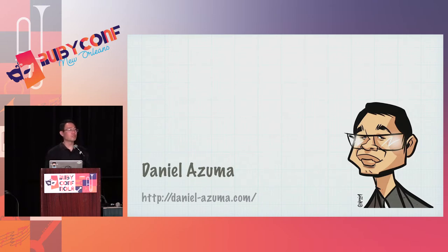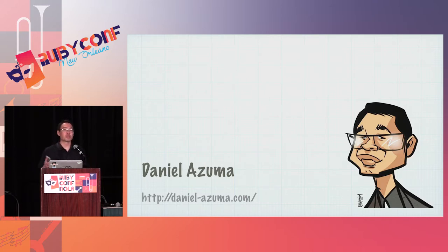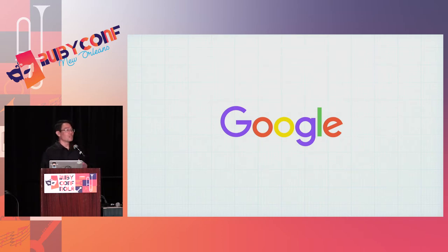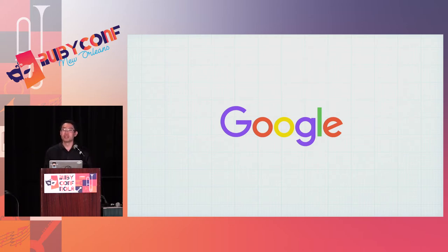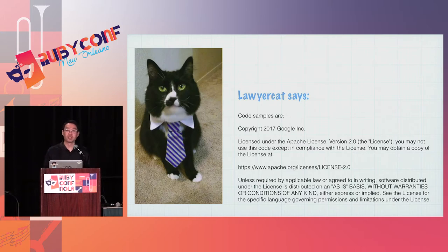A little bit about myself: my name is Daniel, I've been developing since the late 90s. I started with Ruby around 2005, right as Rails was starting to enter the picture. I joined a series of Rails startups, then about four and a half years ago I joined a small company — I'm part of the cloud platform team working on stuff to help Ruby developers use the cloud platform. All the code you see here — sample code, live coding — is copyright the company and Apache 2 licensed.